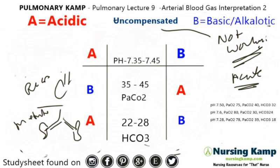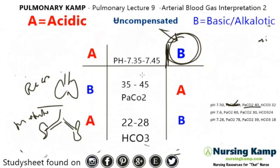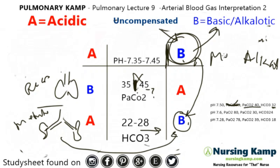Let's go through some ABGs. First one: pH is 7.50 — that's outside the normal box, so we note it. PaCO2 is 40 — that's right in the middle. HCO3 is 32 — that's elevated. The rule is you connect the matching letters: B to B. So we have an alkalotic condition, and because it connects in the metabolic area, this is metabolic alkalosis.